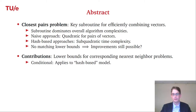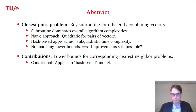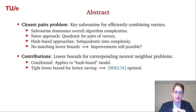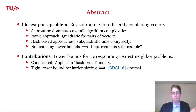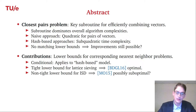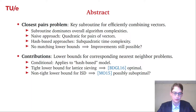Our lower bounds are conditional on the hash-based model, which we'll describe shortly. They don't necessarily apply to all approaches for solving the closest pairs problem, but this model is quite broad — it covers almost all approaches in lattice sieving to date. Within this model, the lower bound for lattice sieving is actually tight: it matches the current best known techniques for solving the nearest neighbor problem.